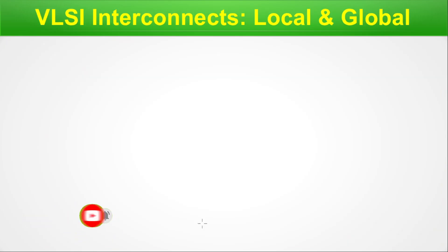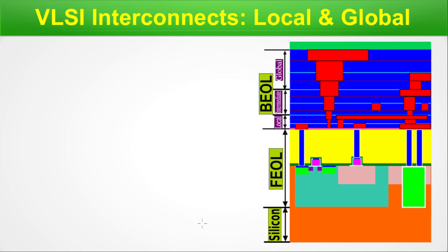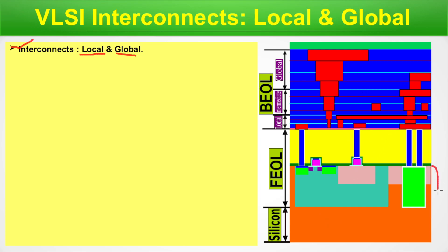VLSI interconnects: local and global. There are two types of interconnects depending on their position — we call them local and global. Looking at the diagram, this is the silicon layer with active regions up to the FEOL zone. Then comes the back end of line with three parts: local, intermediate, and global.